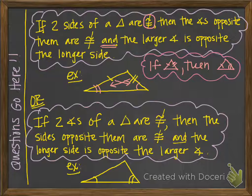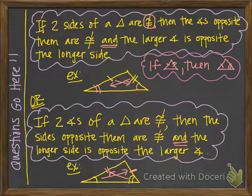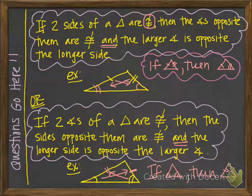The theorem at the bottom is very similar. This time we start with two angles that are not congruent — you can tell by the picture. If that's the case, then the sides opposite them are also not congruent. The longer side is opposite the larger angle, and therefore the shorter side is across from the smaller angle. The shortcut in a proof: if two angles in a triangle are not congruent, then the sides opposite them will also not be congruent.